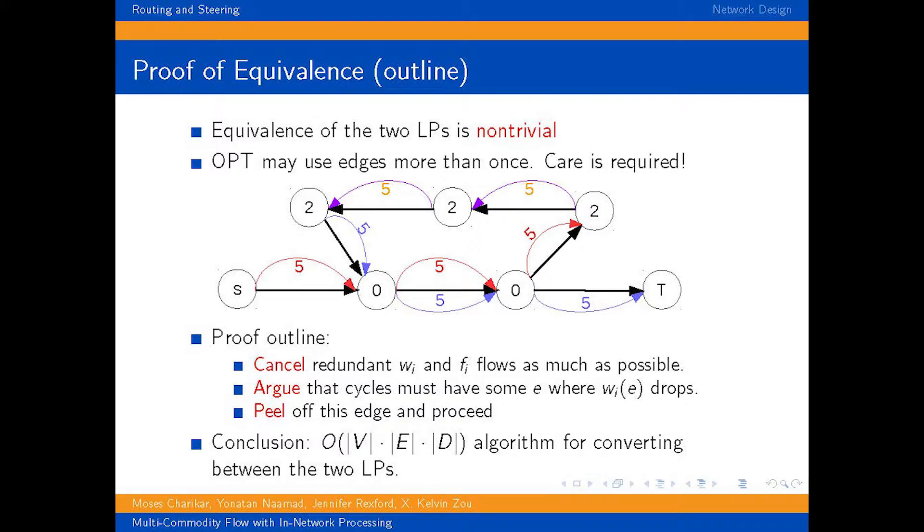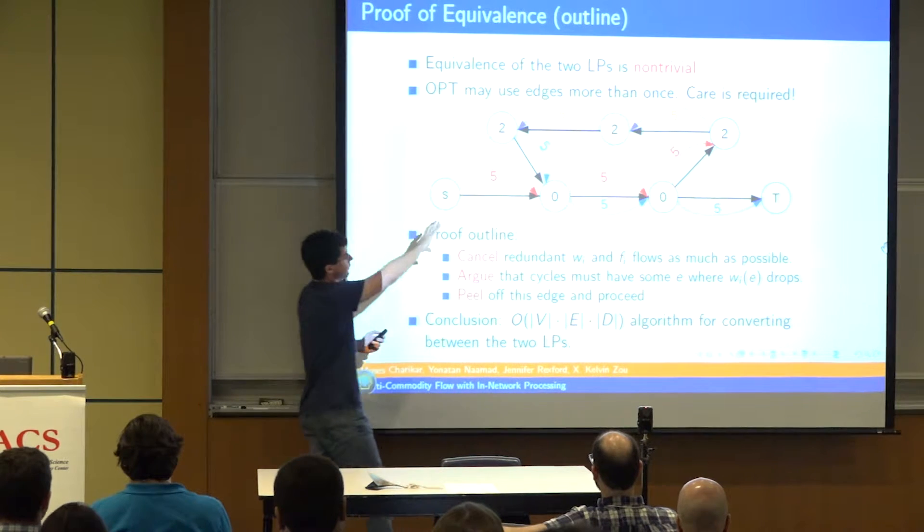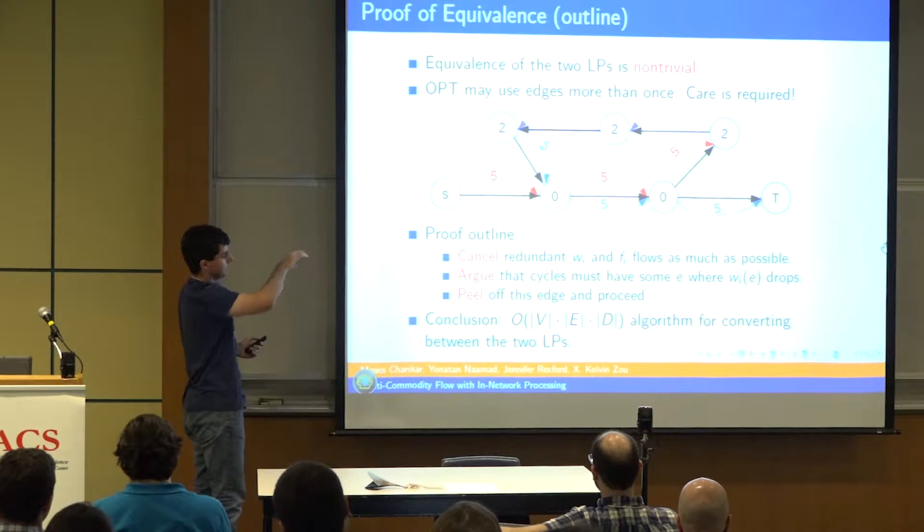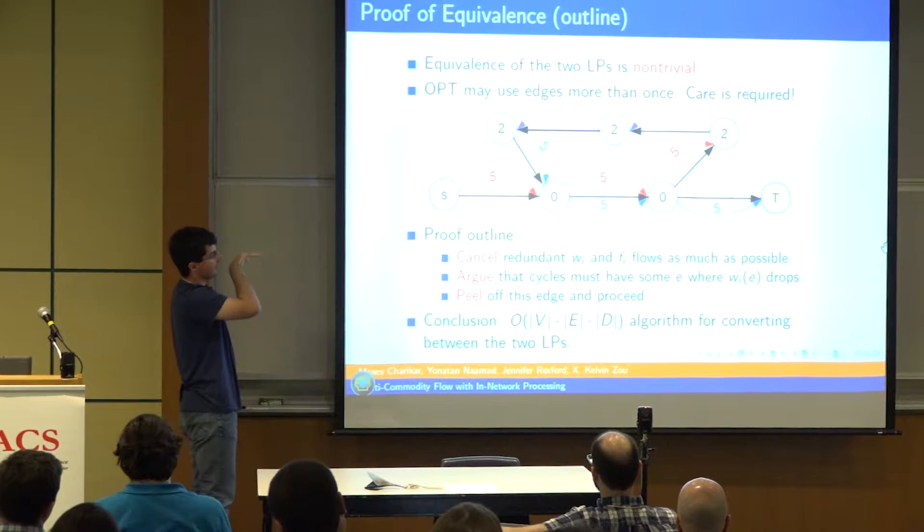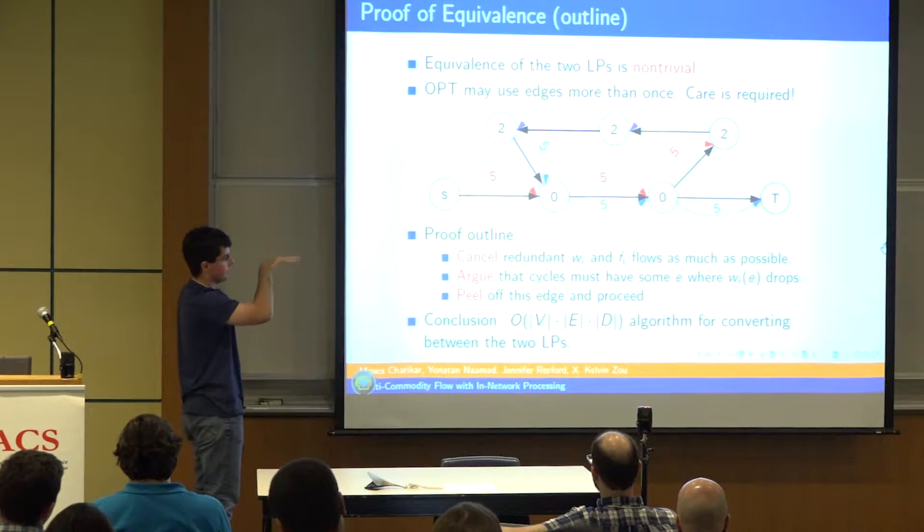That is, showing that this linear program is actually equivalent to the walk-based linear program. While for multi-commodity flow this is more or less straightforward, there is a bit of a snag for our version of the problem. Because, in some cases, the optimal solution might reuse edges. So here's an example of a graph.